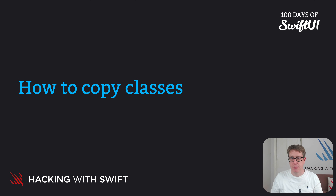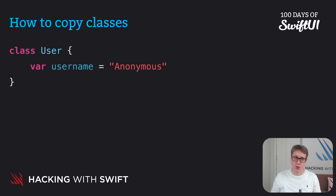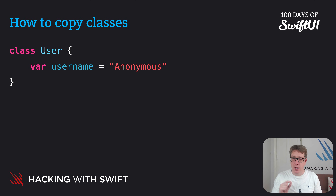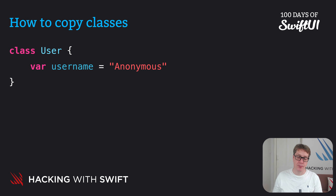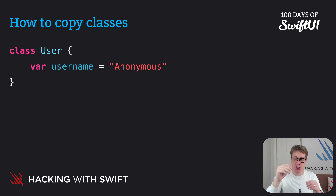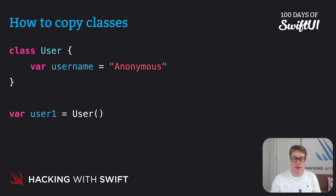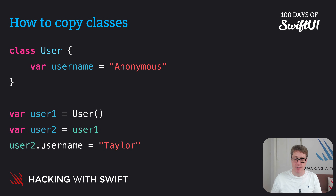To see this in action, here's a simple class called User. It has one property — a variable property called username with a value of anonymous. Because it's stored inside a class, it'll be shared across all copies of the class. We can make an instance of that class called user1, then take a copy of user1 into user2 and change its username value.